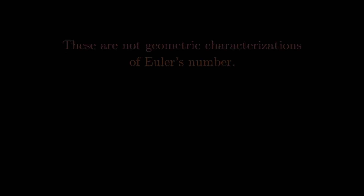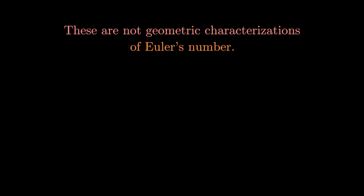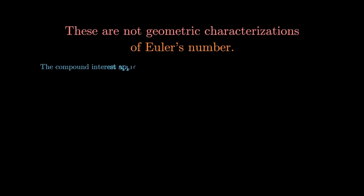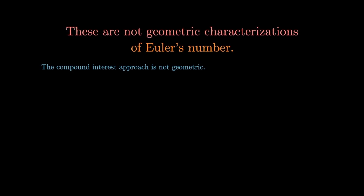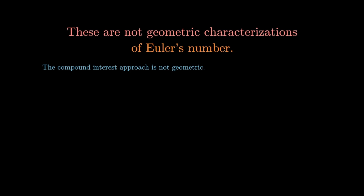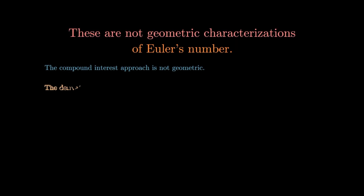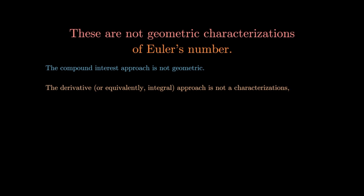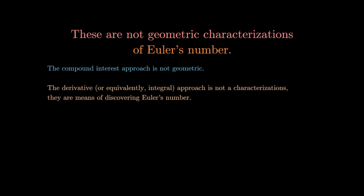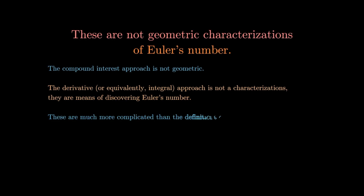What we see is that these are not geometric characterizations of Euler's number. The compound interest approach is certainly not geometric — I didn't draw any pictures and the geometry is not clear at all. It's more of an analytic interpretation. The derivative or integral approach is not even a characterization in my opinion; it's more of a discovery of Euler's number. And they are much more complicated than the definitions we can give for pi, so perhaps we're not understanding exactly why pi and Euler's number are linked at all.